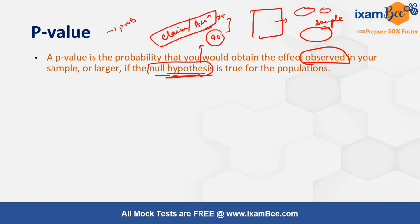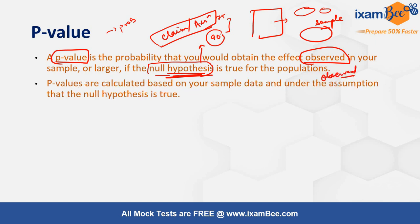Given that you assume your null hypothesis — your assumption or claim — is true, you then find out the p-value, which is the probability that there will be an observed effect. P-values are calculated on the basis of the sample data and given that your null hypothesis is true.